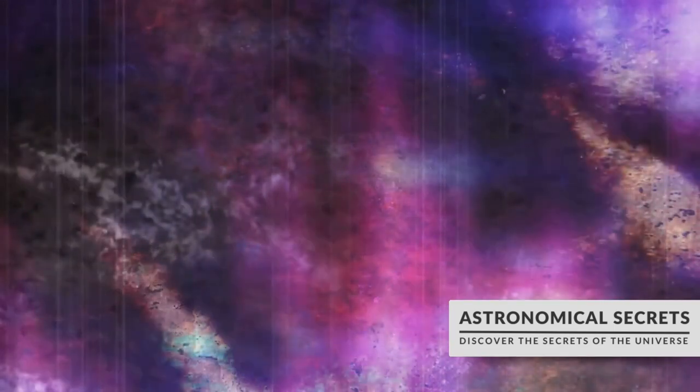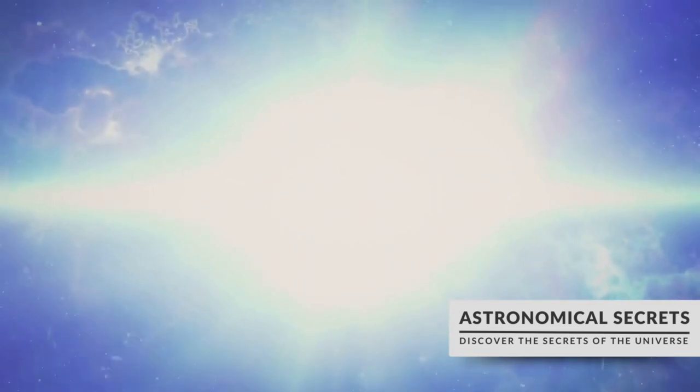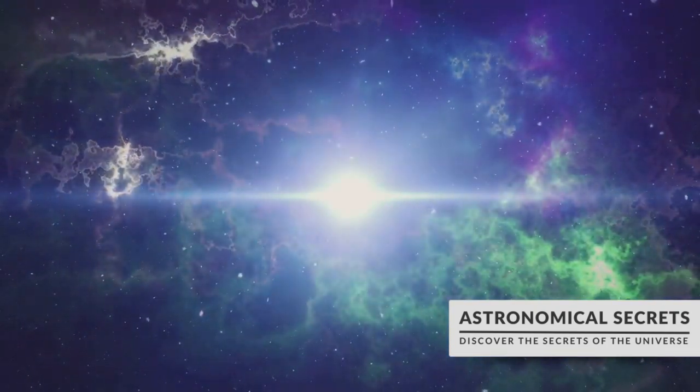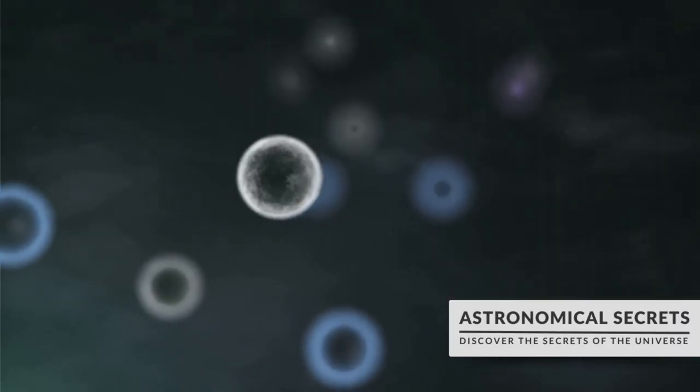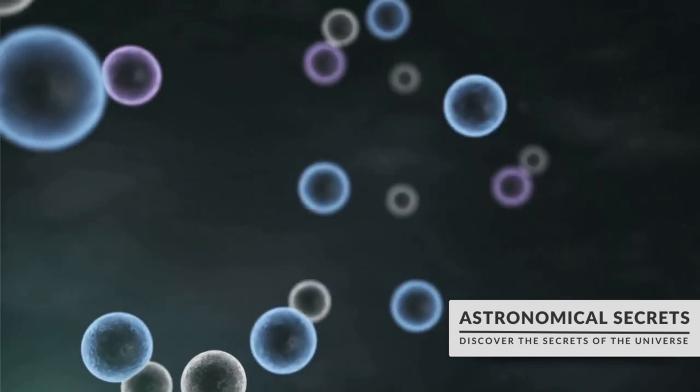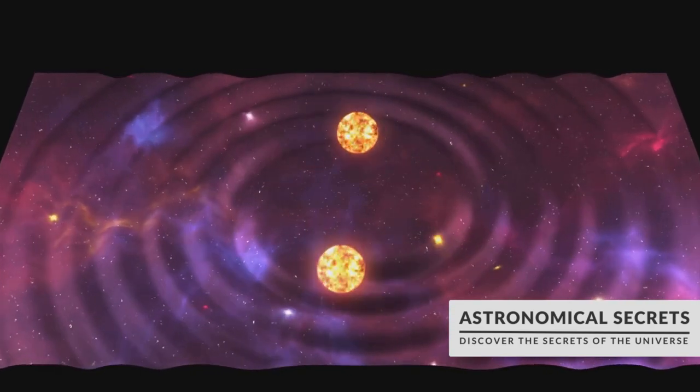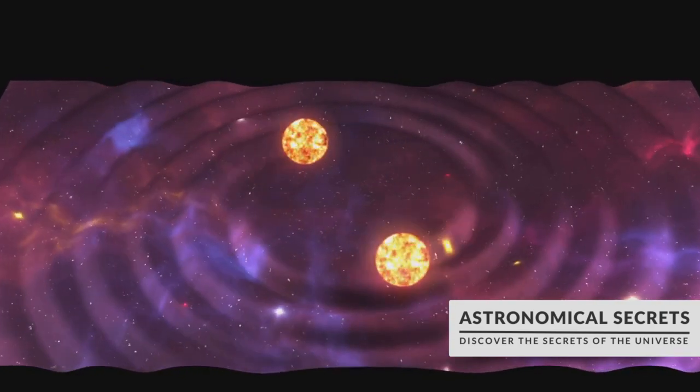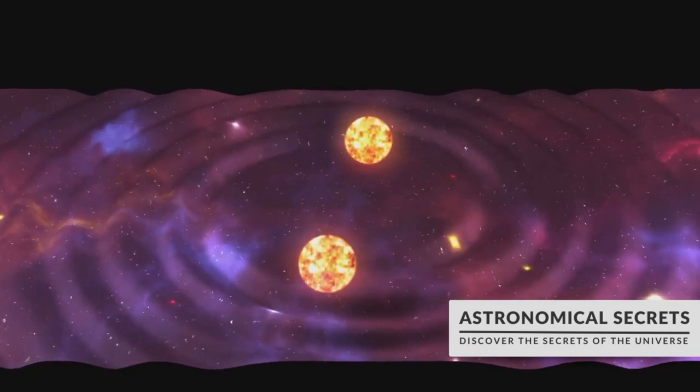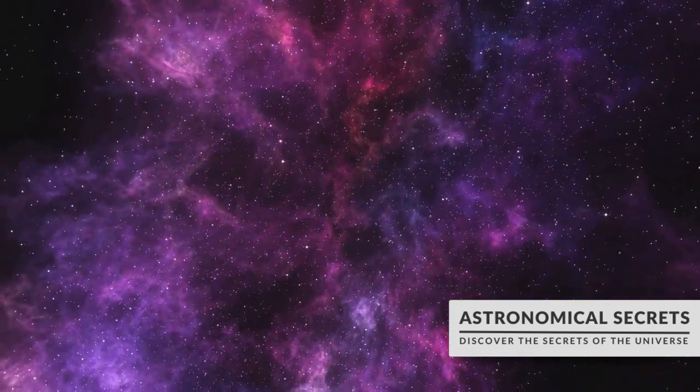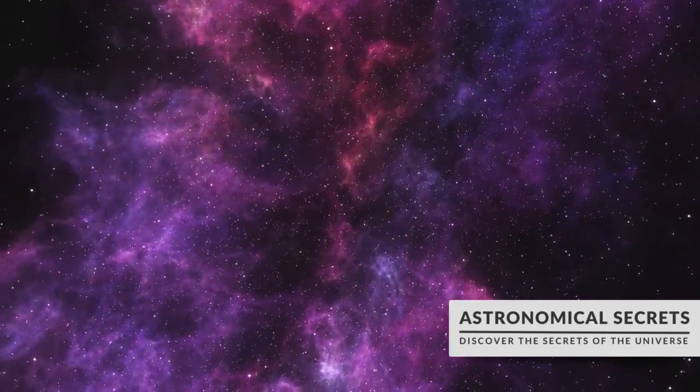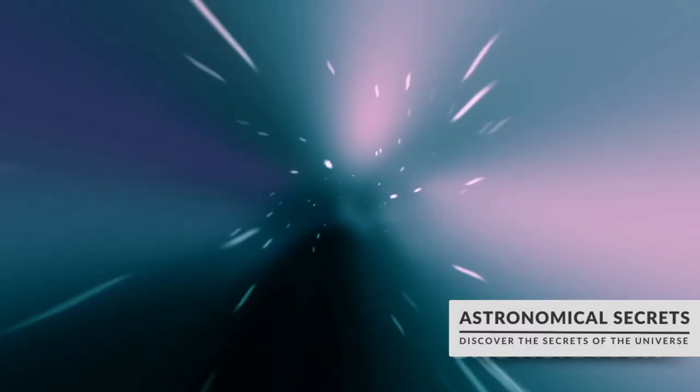As the universe continued to expand and cool, things started to happen. Energy condensed into particles, quarks combined to form protons and neutrons, and eventually these particles came together to form atoms. This was not a smooth process, however. The early universe was a chaotic soup of particles constantly colliding and interacting. It was only after about 375,000 years that the universe cooled enough for atoms to form and light to travel freely. This light is still visible today as the cosmic microwave background radiation, a faint glow permeating all of space.